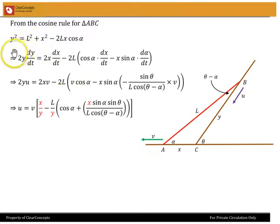Pretty straightforward differentiation, nothing fancy. We can use the cosine rule now. We get y² equals L² + x² - 2Lx cos α. Again we differentiate this with respect to t. We get 2y dy/dt equals 2x dx/dt minus 2L times [cos α dx/dt - x sin α dα/dt].